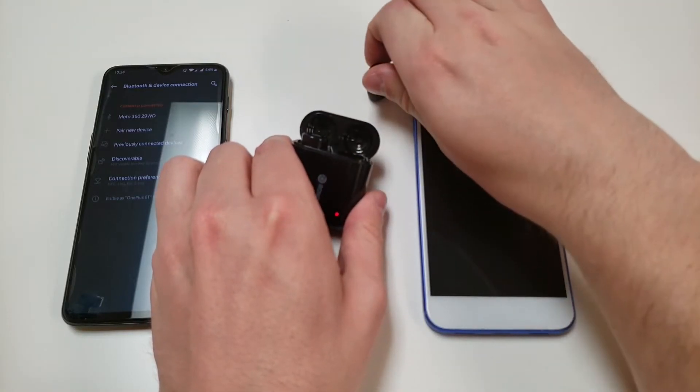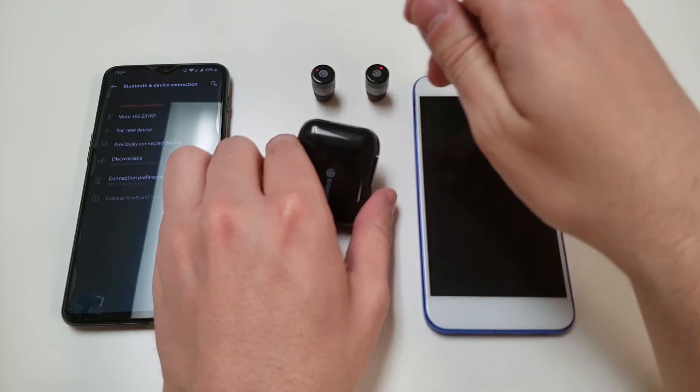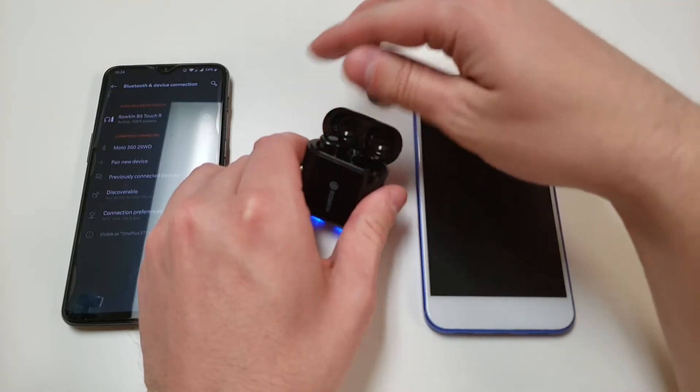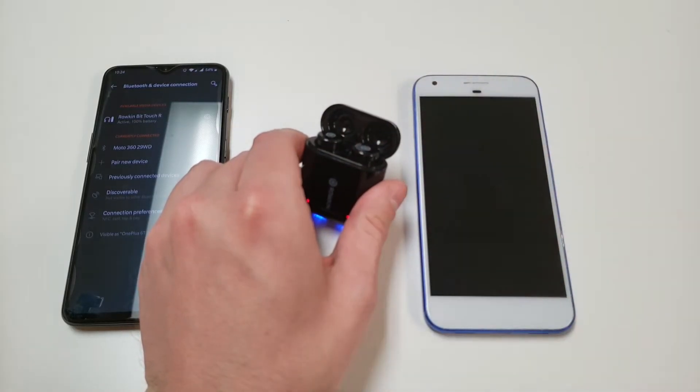Taking the buds out of the case when they're already paired is a simple process too. Just put them in your ears and it'll say that it's paired. Again, it's super simple. And then when you're done, you just drop them in the case. That simple.